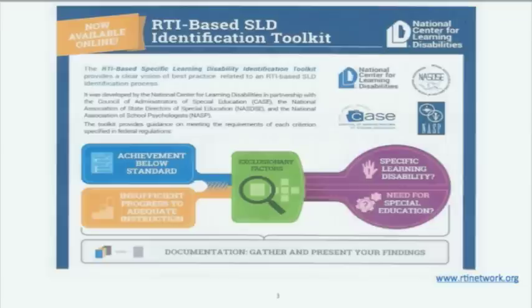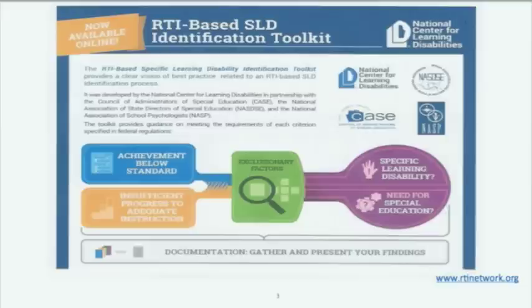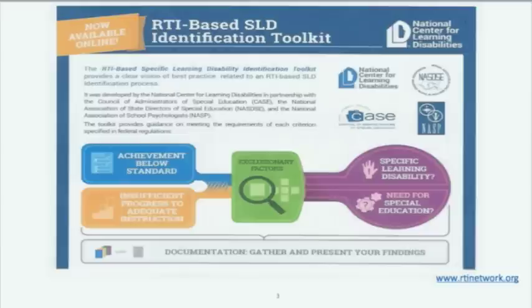The toolkit follows the way the federal government defines unexpected underachievement, the phrase that defines specific learning disabilities in IDEA, the Federal Special Education Law. It says first you have to determine that there is achievement below the standard and below what you would expect from the student in one of eight different areas. Then you have a choice to make as a school district or state: are you going to use RTI as the foundation for your decisions, not as the only data source but as the foundation? Or are you going to use a pattern of strengths and weaknesses? Or another research-based procedure?